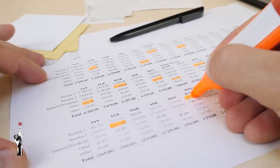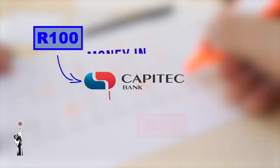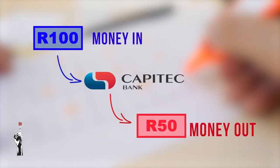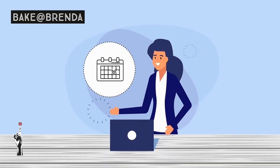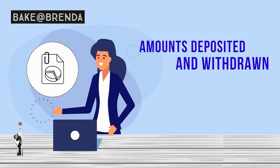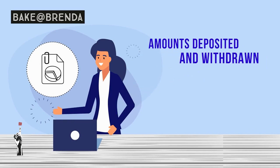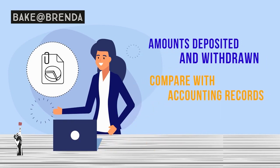The second source document we'll be looking at is the bank statement. The bank statement shows the client how much money has been deposited into the bank account and how much money has been withdrawn from the account. The bank statement reflects the bank's transactions with the business. The business can access bank statements at any time during the month, and at the end of the month the bank sends a bank statement showing the amounts deposited and withdrawn, which the business can use to compare with its accounting records.